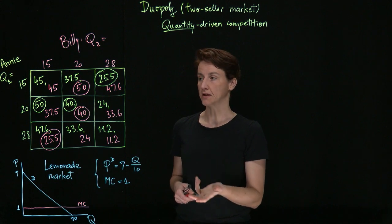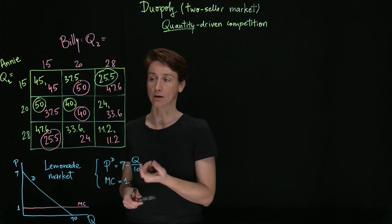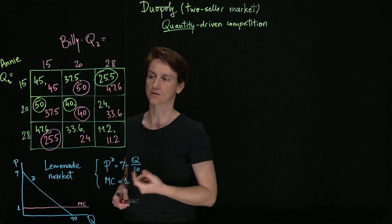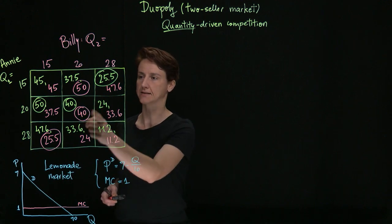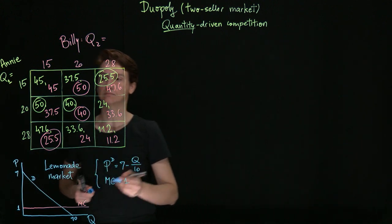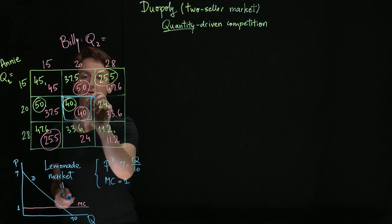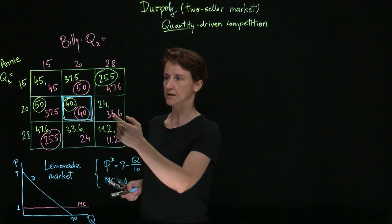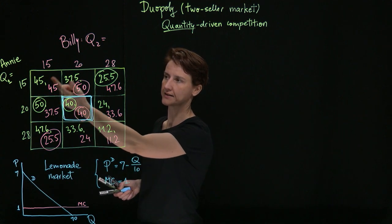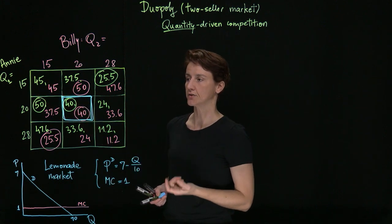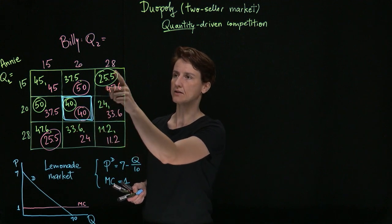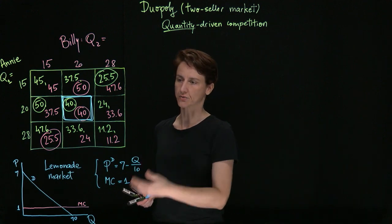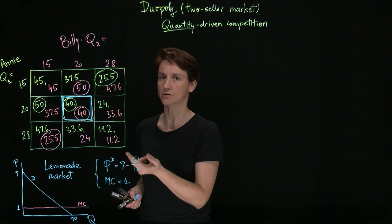So what, if any, Nash equilibria are there? Remember, a Nash equilibrium has to be an outcome where both players are best responding. There's only one cell in this payoff matrix where both payoffs are circled, indicating a best response, and that's in the center. So in this game, there's only one Nash equilibrium where they each make 20 glasses and they each earn profits of 40. This is not as good an outcome for them as if they had produced slightly less. However, they do still earn substantial profits — they no longer have a race to the bottom, which was the outcome when price is what drives competition.